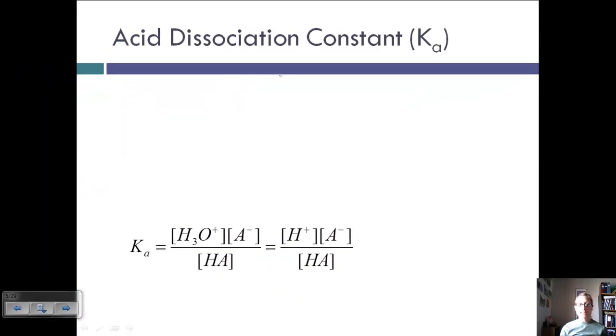Just like we had Kc, which was the equilibrium constant in terms of concentration, and Kp, which was the equilibrium constant in terms of pressure, we can also look at what's called the acid dissociation constant, which is Ka.